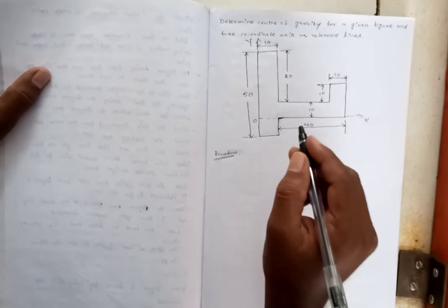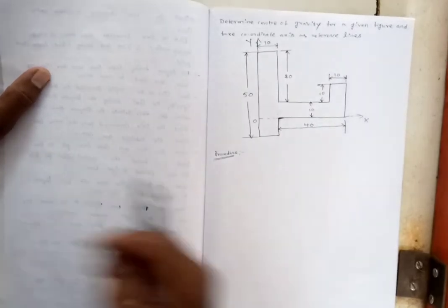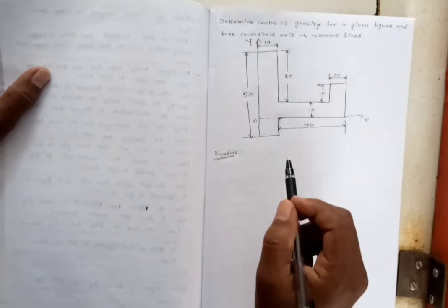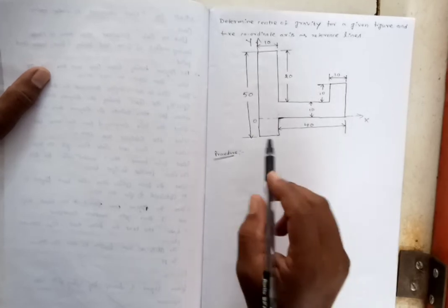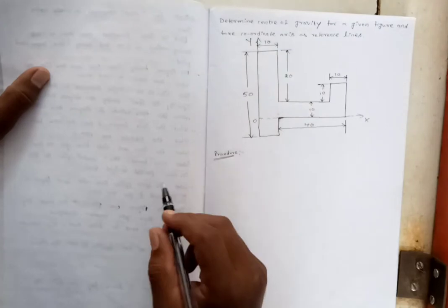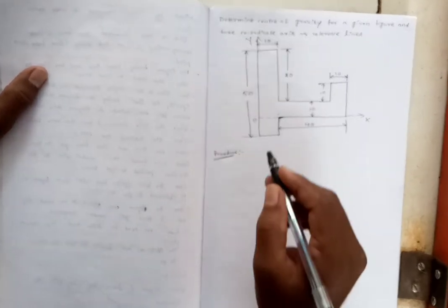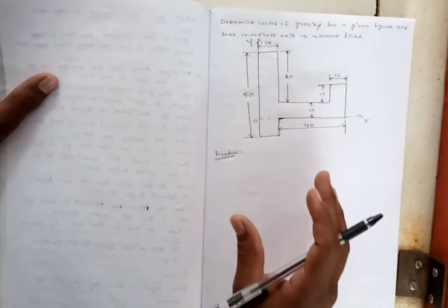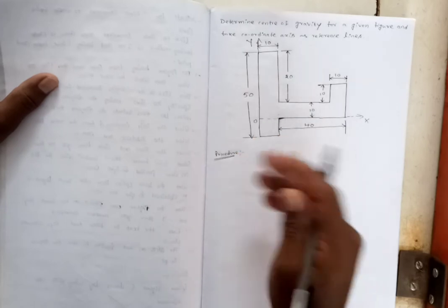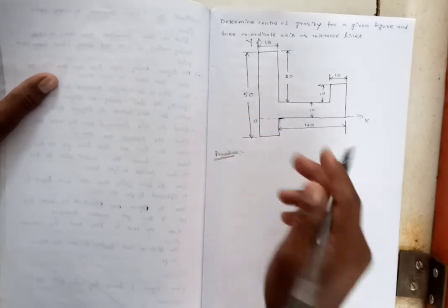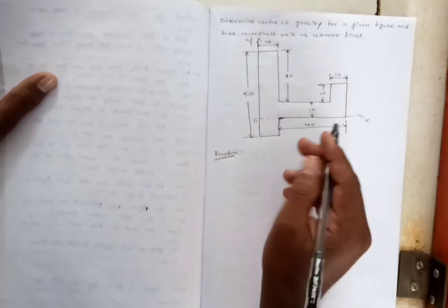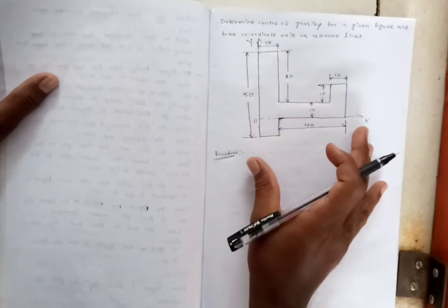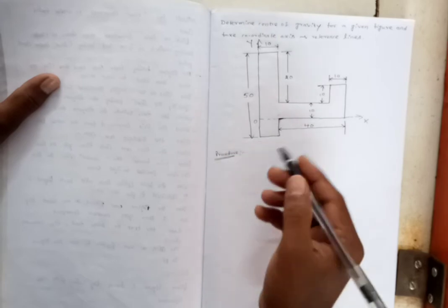Before calculating the center of gravity, we need to check whether the given diagram is symmetric about the X-axis or Y-axis. The given diagram is unsymmetric about both axes, so we need to calculate both x-bar and y-bar. Since the given section is a complex shape, we need to divide it into different known shapes such as rectangles, triangles, or squares.